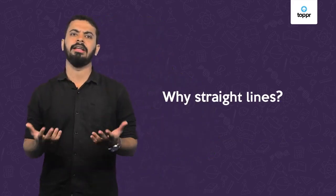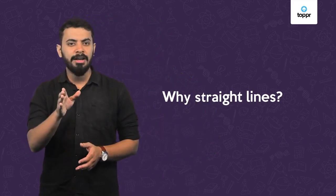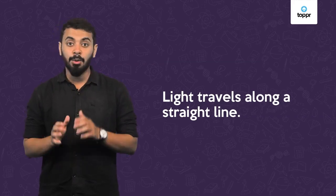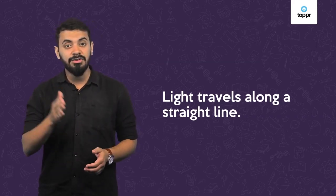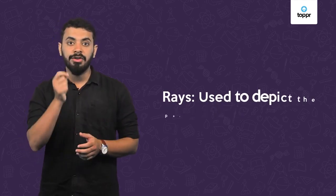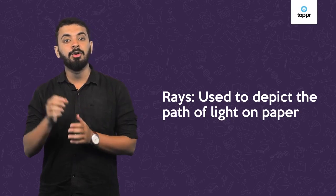Now even in physics we represent light using straight lines. But why straight lines? Well, you know that light travels along a straight line. So it only makes sense that we use a straight line to represent light. Therefore we use rays to depict the path of light on paper.